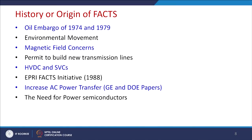Let us go back to the history of FACTS devices. There was an oil embargo from 1947 to 1979. Due to the huge spikes in oil prices, putting up extra power plants became costly. Therefore, people thought of a solution where, instead of extra power plants, power could be transmitted over long distances from one point to another. Environmental movements also forced the shutdown of many fossil-fuel-based power plants.